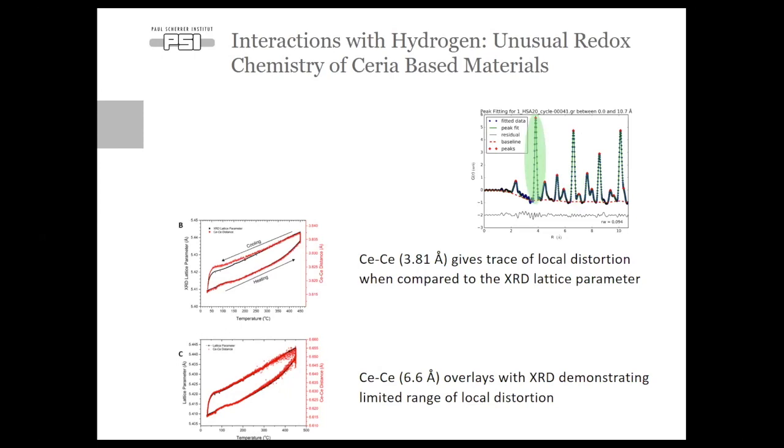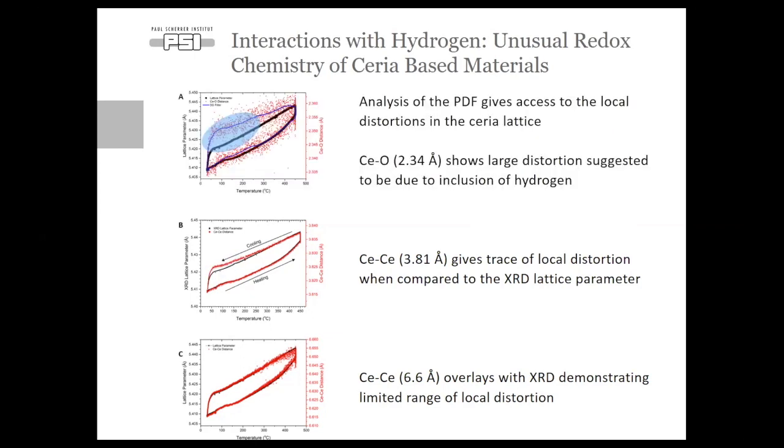However, when we start to look at the 3.81 angstrom distance, what we find is, upon cooling, there is a deviation between the XRD refinement and the position of this peak. So, this is pointing towards a local distortion within the ceria lattice. In fact, this can be enhanced further when you look at the cerium-oxygen distance at 2.34 angstrom, where we expect to see a bigger distortion if there is hydrogen bonding within the structure. In this case, what we see, actually, is upon cooling, which is highlighted in the blue region, we see a very large distortion suggesting the inclusion of hydrogen within the structure.